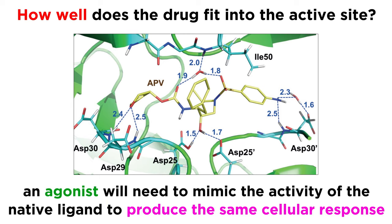On the other hand, if the drug is acting as an agonist, again binding affinity will be relevant, and it will also have to have the right functional groups necessary to promote the same conformational change in the protein as the native ligand, so that the protein will produce the same cellular response.